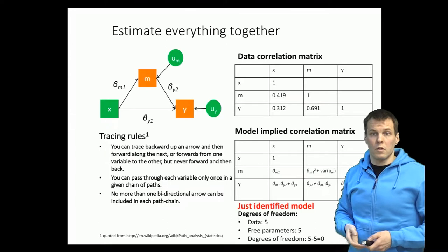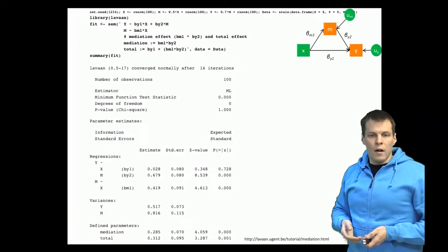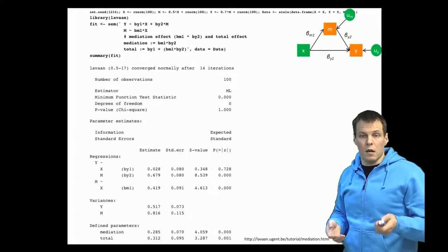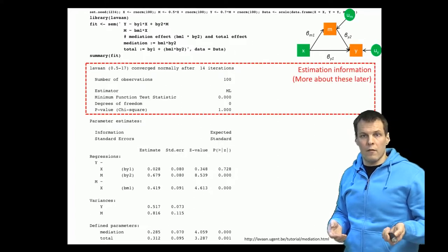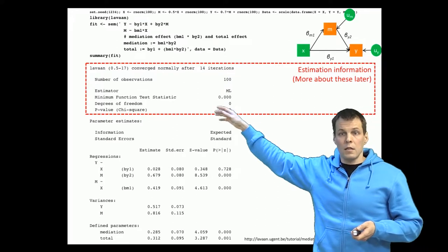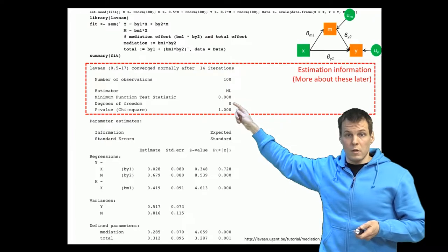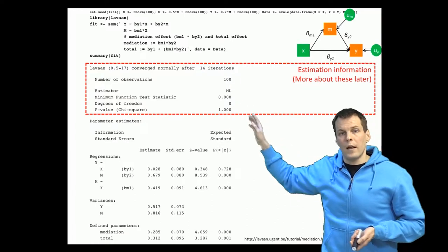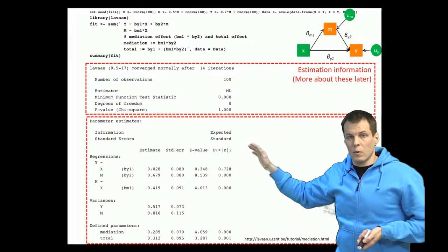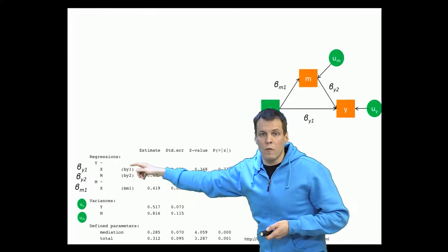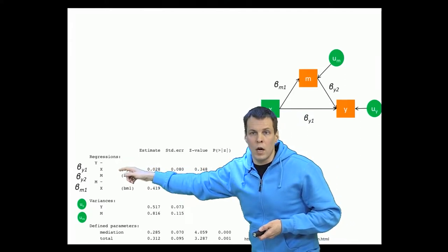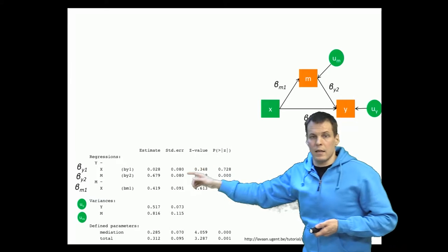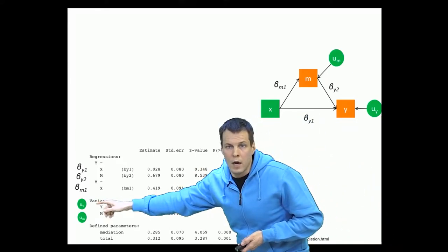We can do that, for example, using the lavaan package in R. You can do the same with the SEM command in STATA. The output contains two important sections: estimation information — which is not particularly useful when degrees of freedom is zero, since we can't do model testing — and the coefficients. We have regressions of y on m and x (beta_y1 and beta_y2), regression of m on x (beta_m1), and the estimated error variances.